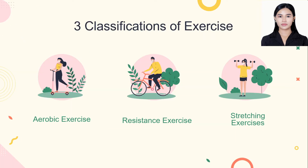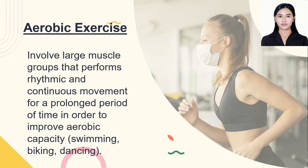We have three classifications of exercise. Starting with number one, we have aerobic exercise. Aerobic exercise involves large muscle groups that perform rhythmic and continuous movement for a prolonged period of time in order to improve aerobic capacity. After this classification of exercise, I will discuss what aerobic capacity is, which is under the five health-related components of physical fitness. Examples given are swimming, biking, and dancing.